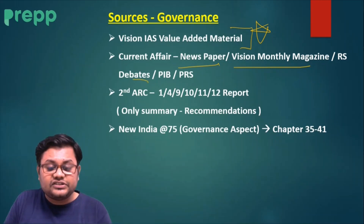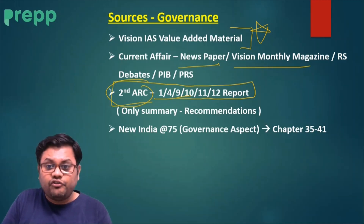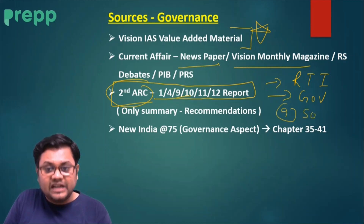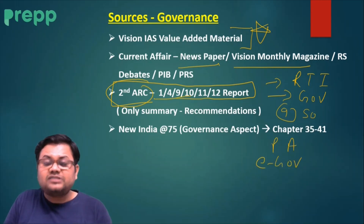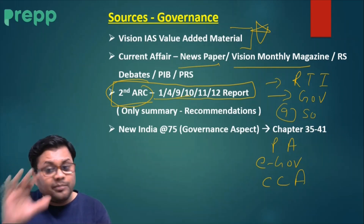For Governance, Second ARC's 1st, 4th, 9th, 10th, 11th, and 12th reports are very important. The 1st report is on Right to Information, the 4th on Governance, the 9th on Social Capital, the 10th on Personnel Administration, the 11th on e-Governance, and the 12th on Citizen-Centric Administration. All of these are part of your syllabus.